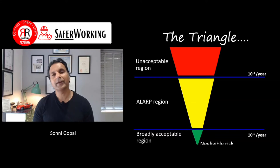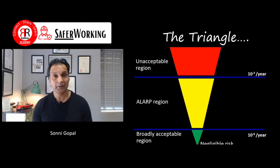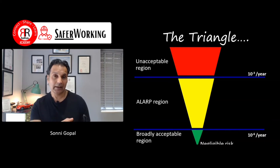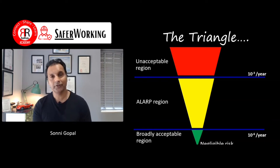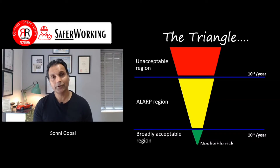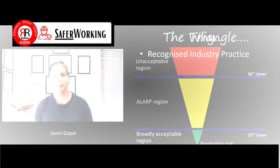There have been numbers assigned to this in the past, and companies do vary in their approach. Typical numbers you'd see between unacceptable and ALARP as a cut-off is 10 to the minus 3, and at the lower levels it would be 10 to the minus 6 per year.